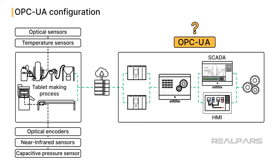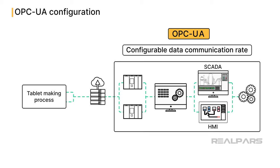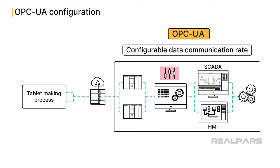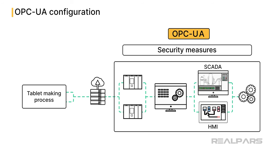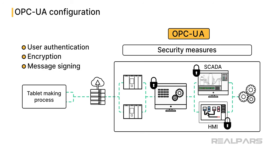So what are the properties that make OPC UA so valuable to the pharmaceutical industry? There are four important characteristics. First, OPC UA has a configurable data communication rate. In pharmaceuticals, rapid changes in conditions can quickly lead to significant batch wastage. Hence, high-frequency data sampling, as fast as 10 milliseconds, can be configured in the OPC UA servers for these applications. Second, security measures are equally as important as data collection rates. Due to the sensitive nature of pharmaceutical data, such as formulas and production rates, available OPC UA security features like user authentication, encryption, and message signing are paramount. These measures also help support regulatory requirements for data integrity.